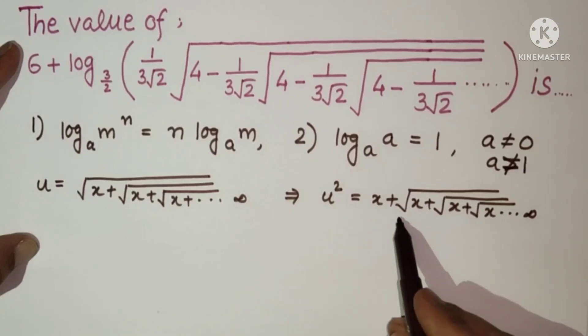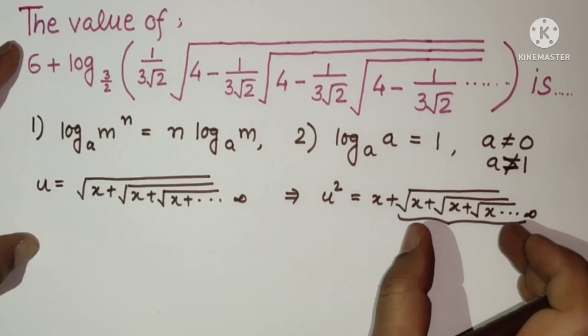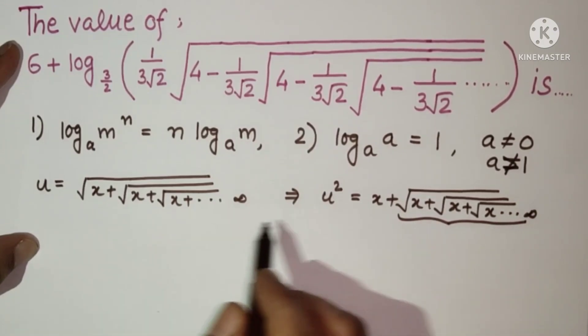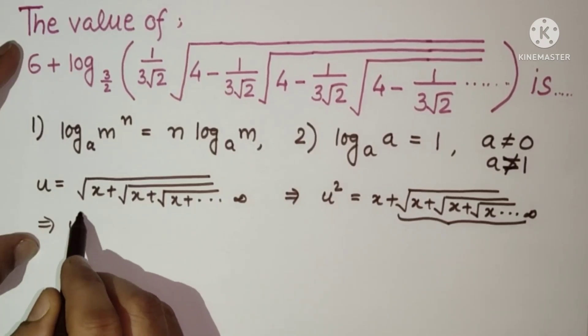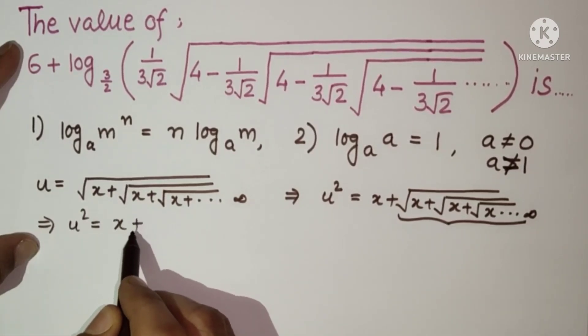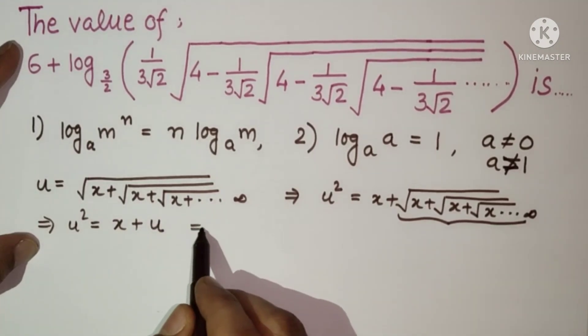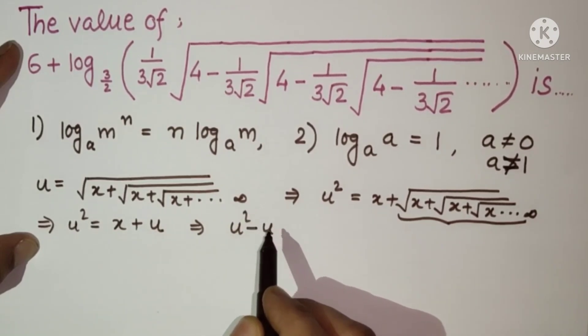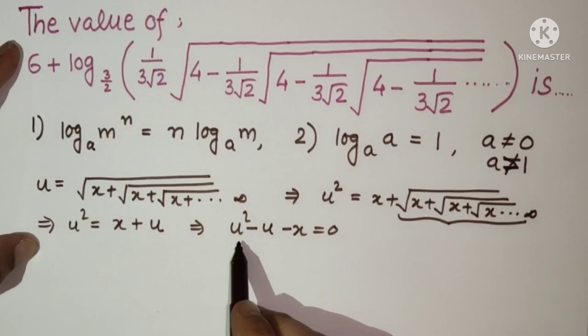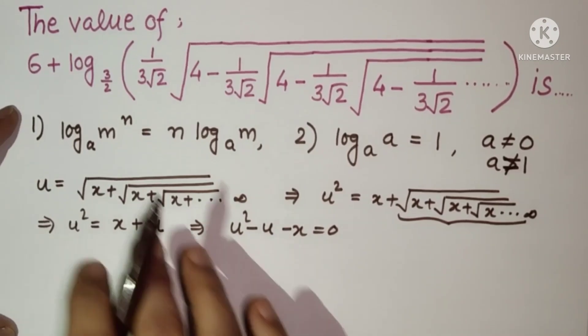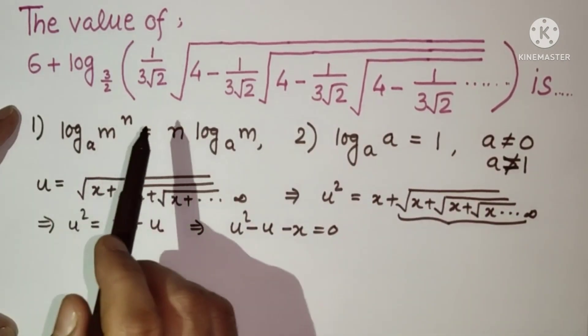So x plus root of up to infinite, and this is what we have assumed it as u in the beginning. So finally we can say that u square is equal to x plus u, so that means u square minus u minus x is equal to 0. So we found an equation. If we know the value of x we will simplify this equation and we will get the value of u.